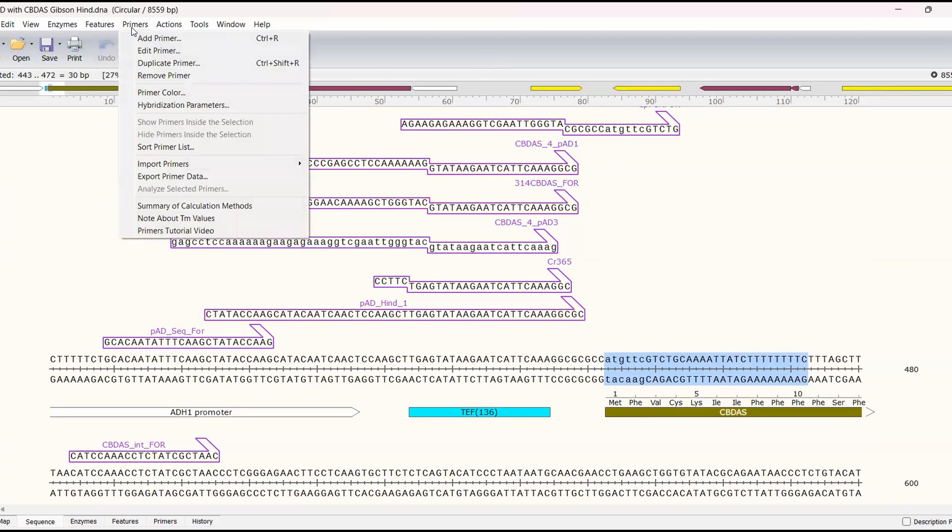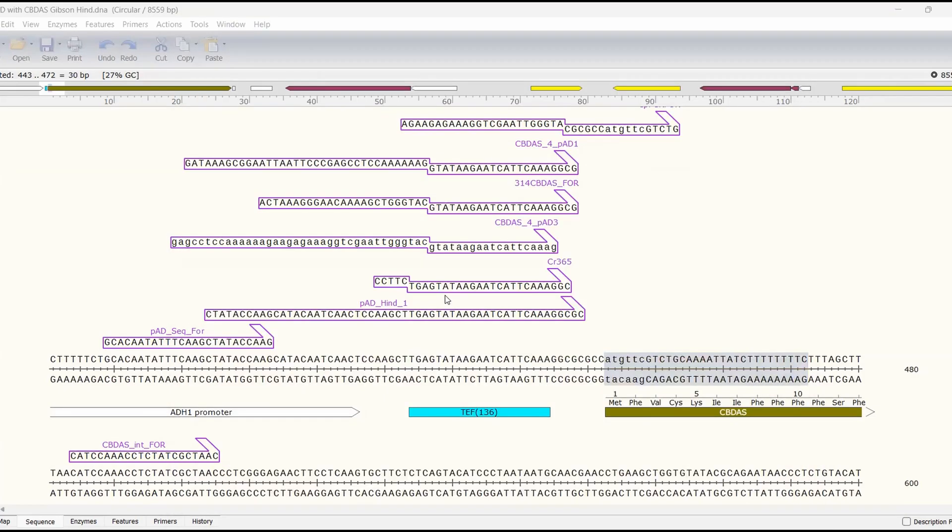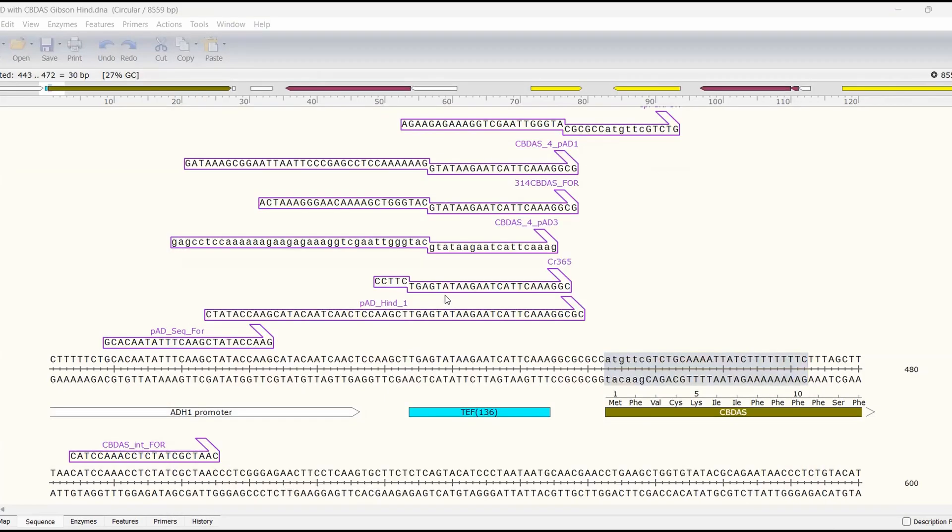If we want to make this a primer we can go to primers, add primer, we want to do it on the top strand and we can name the primer, we'll just name it test one for now, add primer to template. So there's our not so good primer and it's something to be aware of when doing further experiments but at least we know it's not designed perfectly and hopefully our reverse primer will be much better so let's go to the other end of the gene.